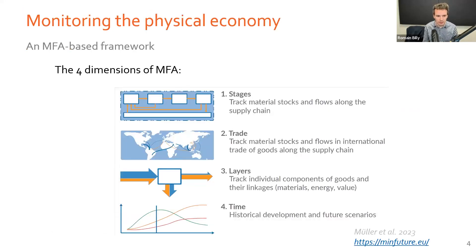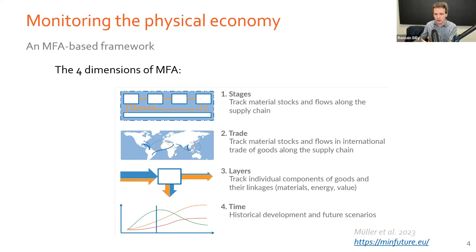To give a bit more background on this type of method, we say that there are four dimensions of material flow analysis models. The first one is the stages — the different processes along the supply chain, from mining to refining to smelting, extrusion, manufacturing, and so on until use and waste management. The second dimension is trade, which was straightforward in the previous diagram — you see trade between different regions and how we exchange flows in international supply chains and networks.